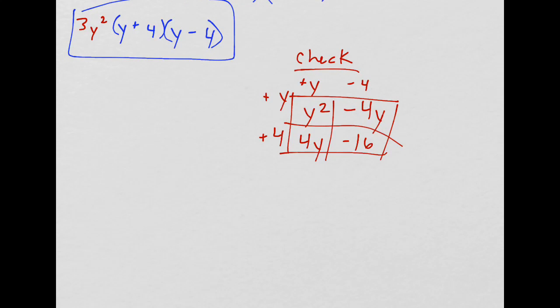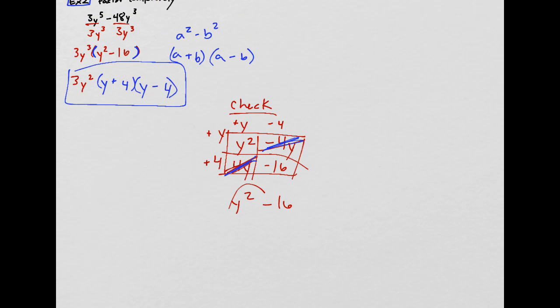Remember, we have to combine like terms here. That cancels out with that. So that goes away. That's why we just have y squared minus 16. It's just a pattern that somebody noticed.